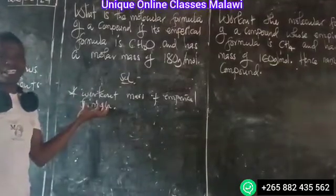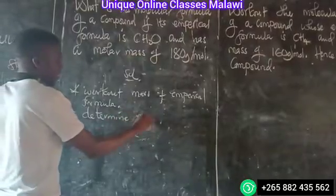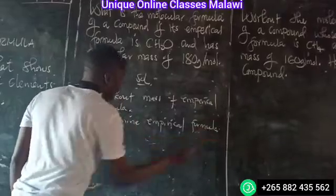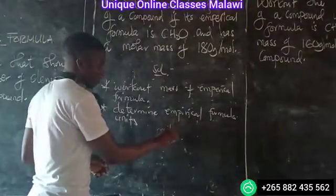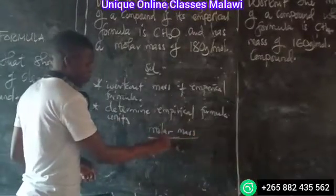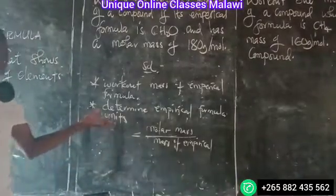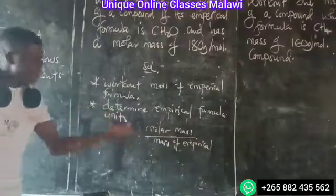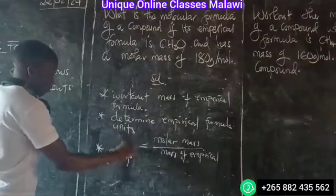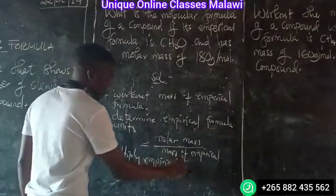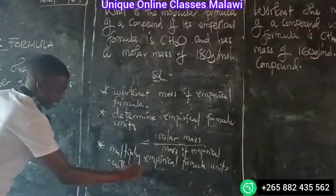The first step is to work out the mass of the empirical formula. The second step is to calculate the formula units. We take the molar mass of the compound divided by the mass of the empirical formula. This gives us what is called the empirical formula units. The next step is to multiply the formula unit by the subscripts.